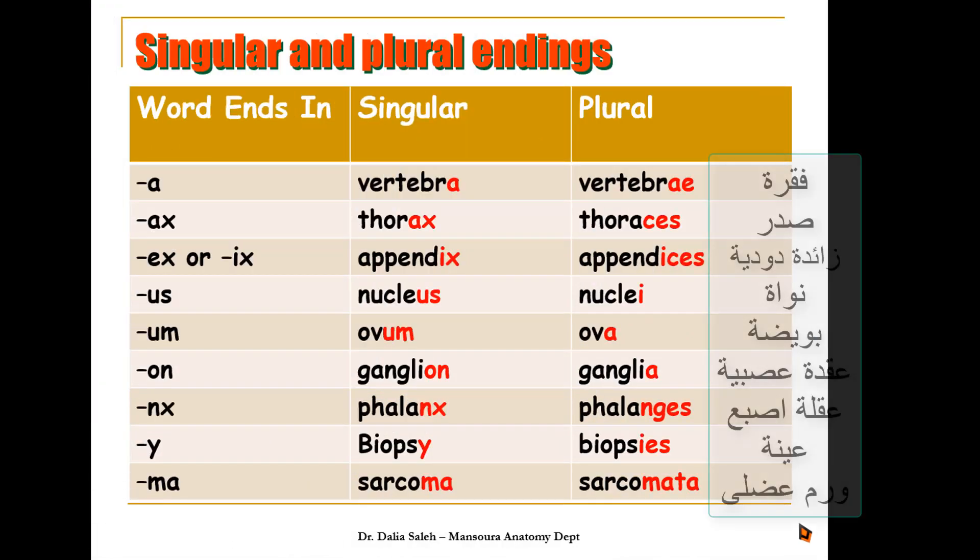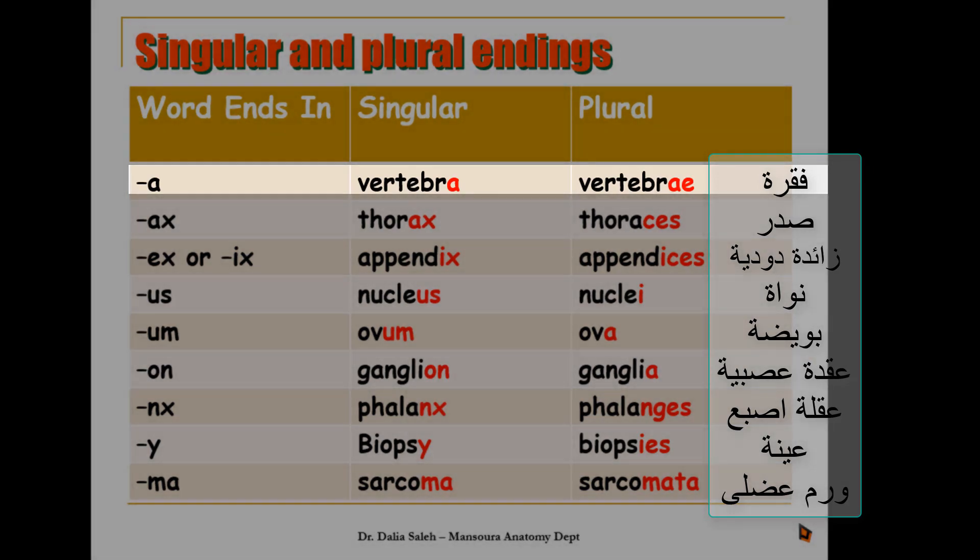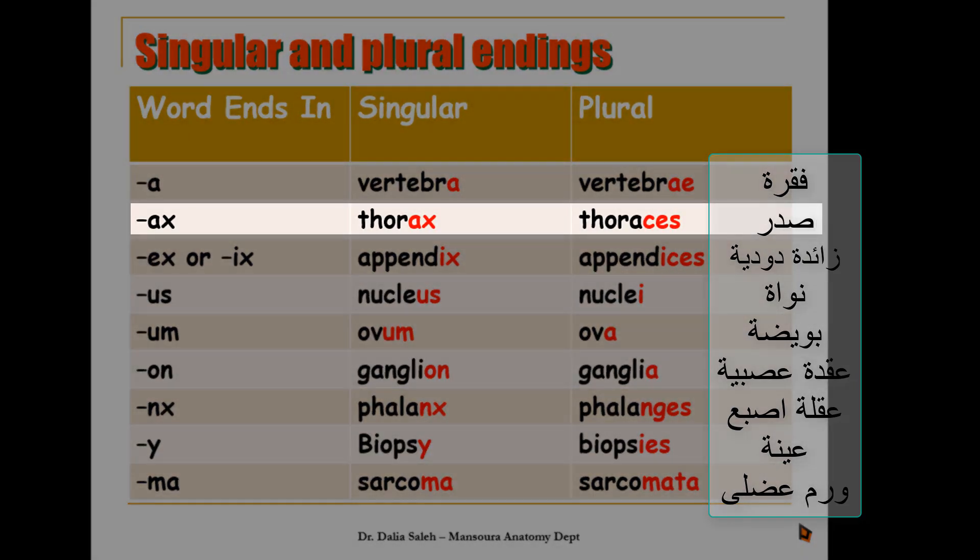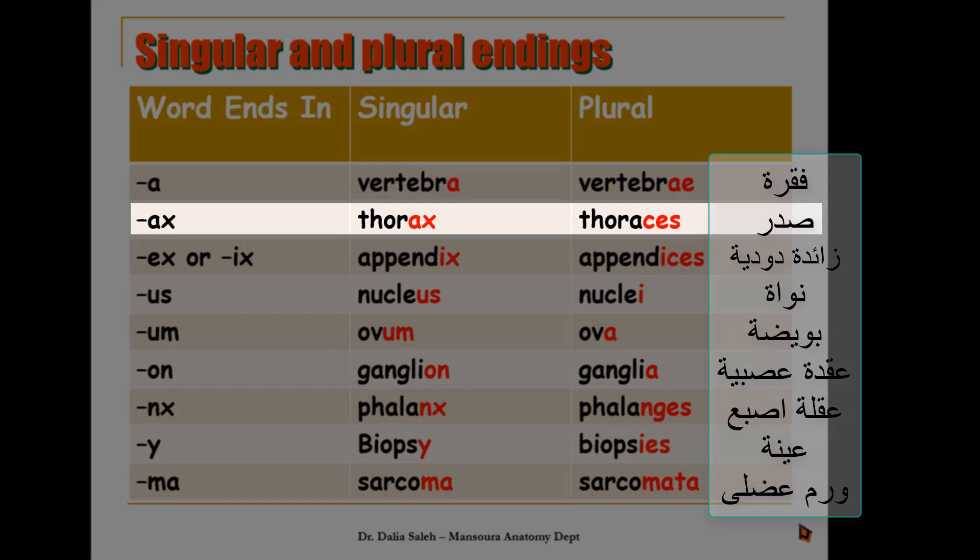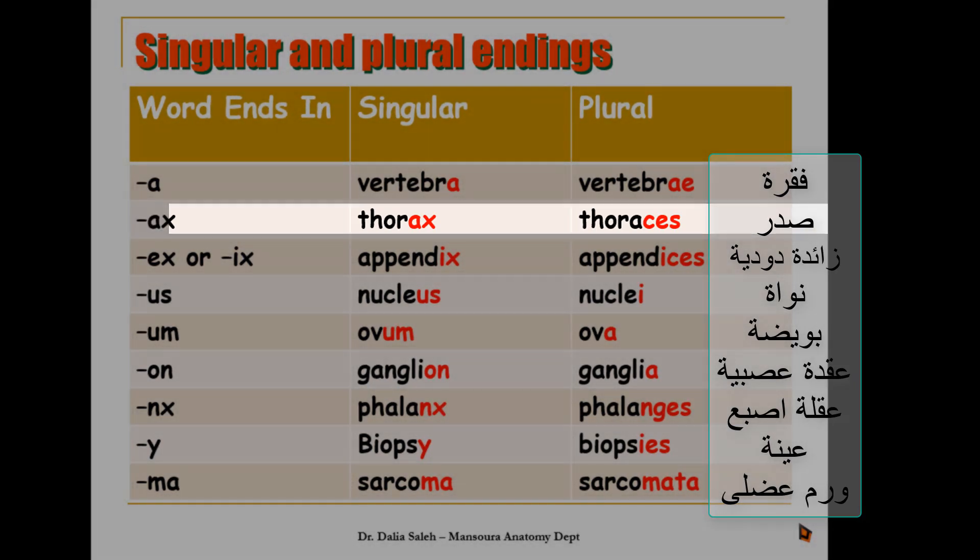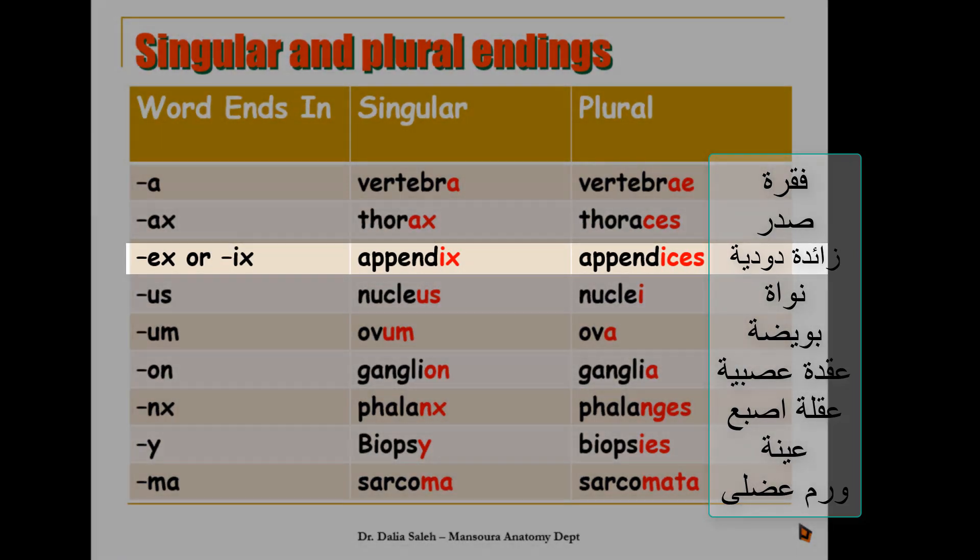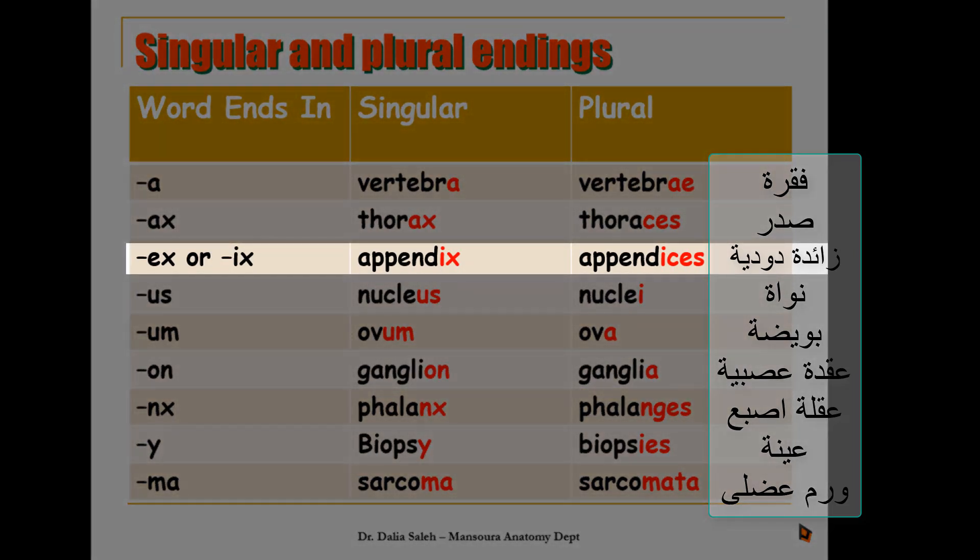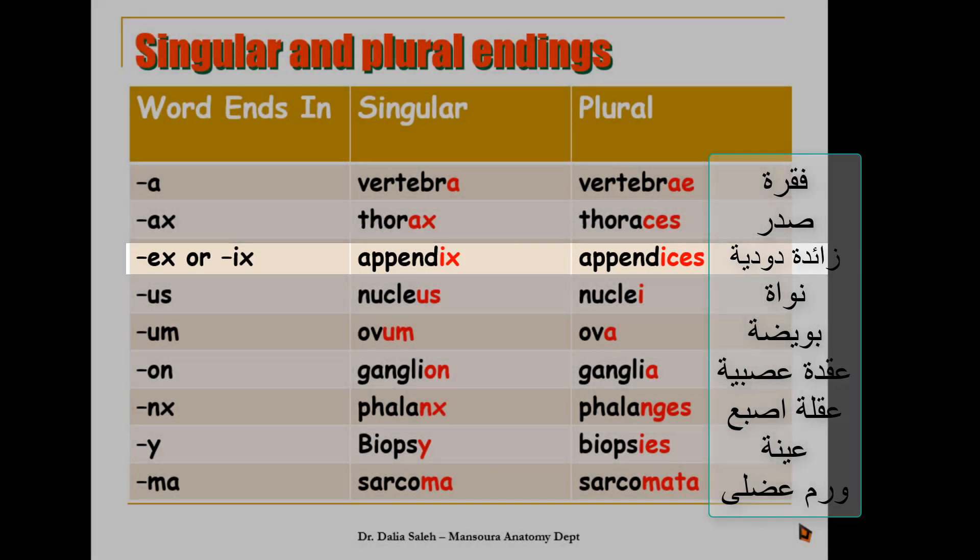Words that end in a letter A change into AE, as in vertebra becomes vertebrae. Words that end in AX change into ACES, as in thorax changes into thoraces. Words that end in EX or IX change into ICES, so appendix becomes appendices.